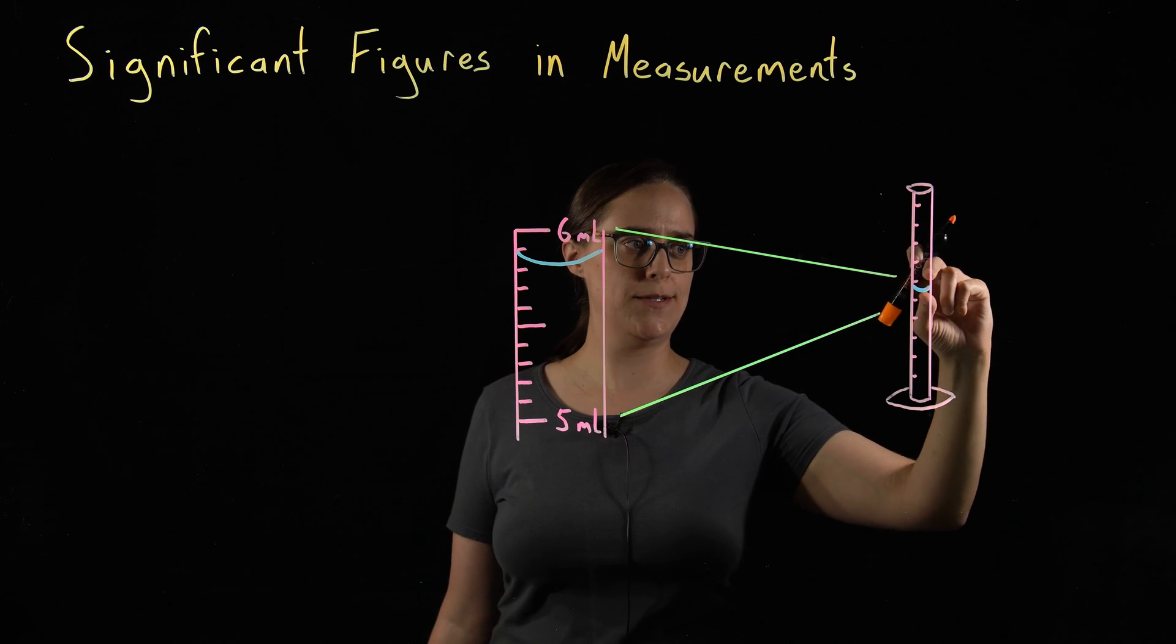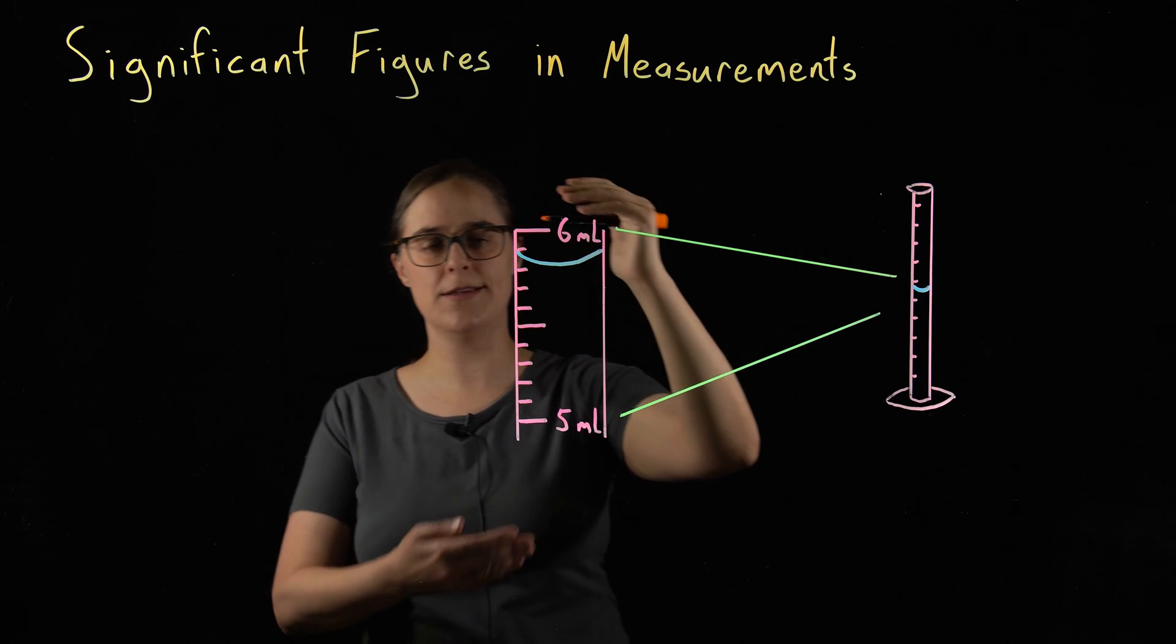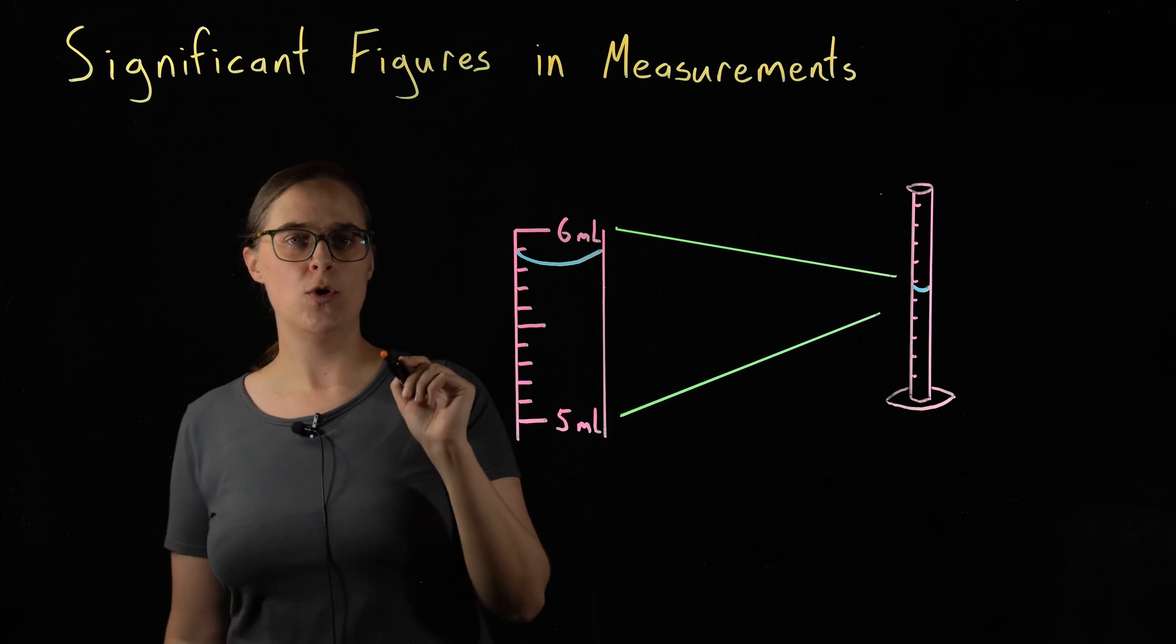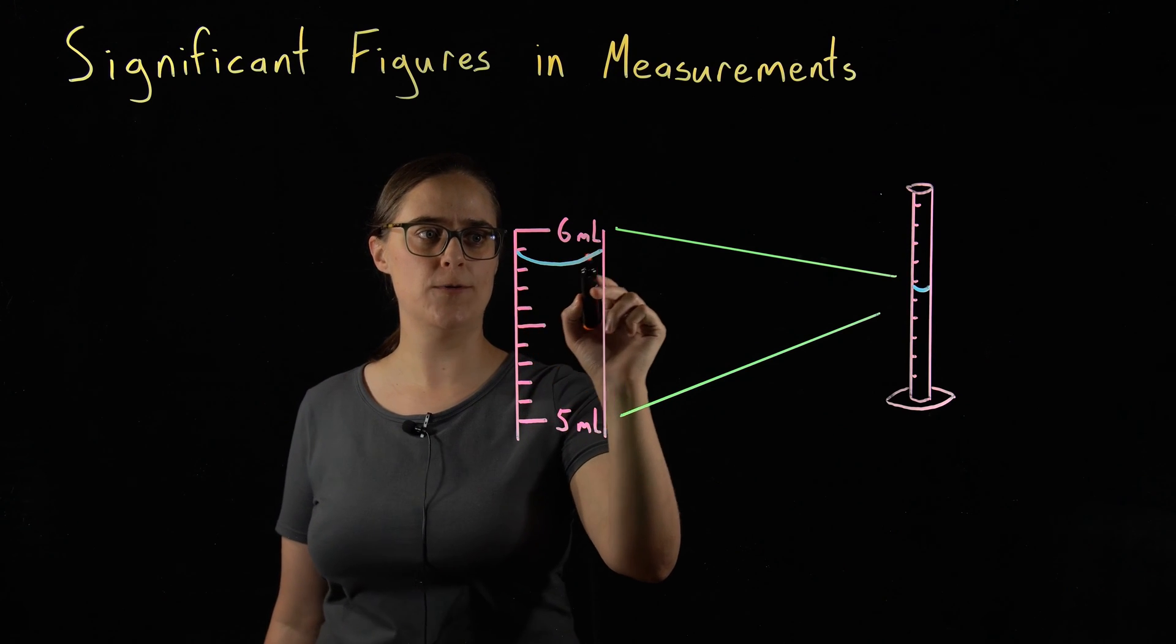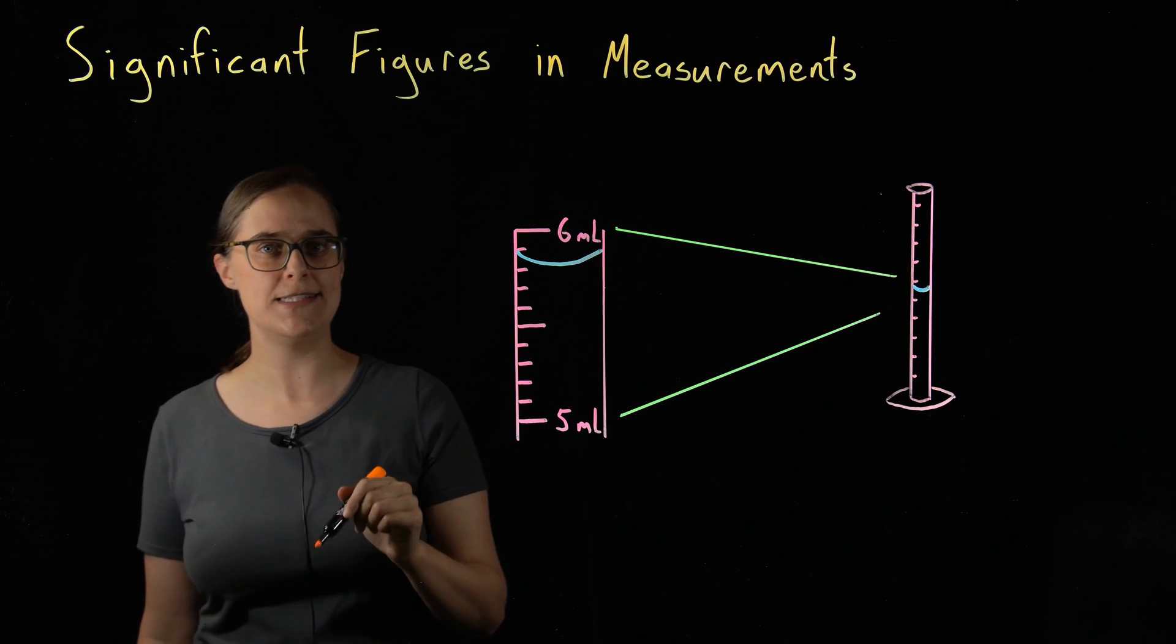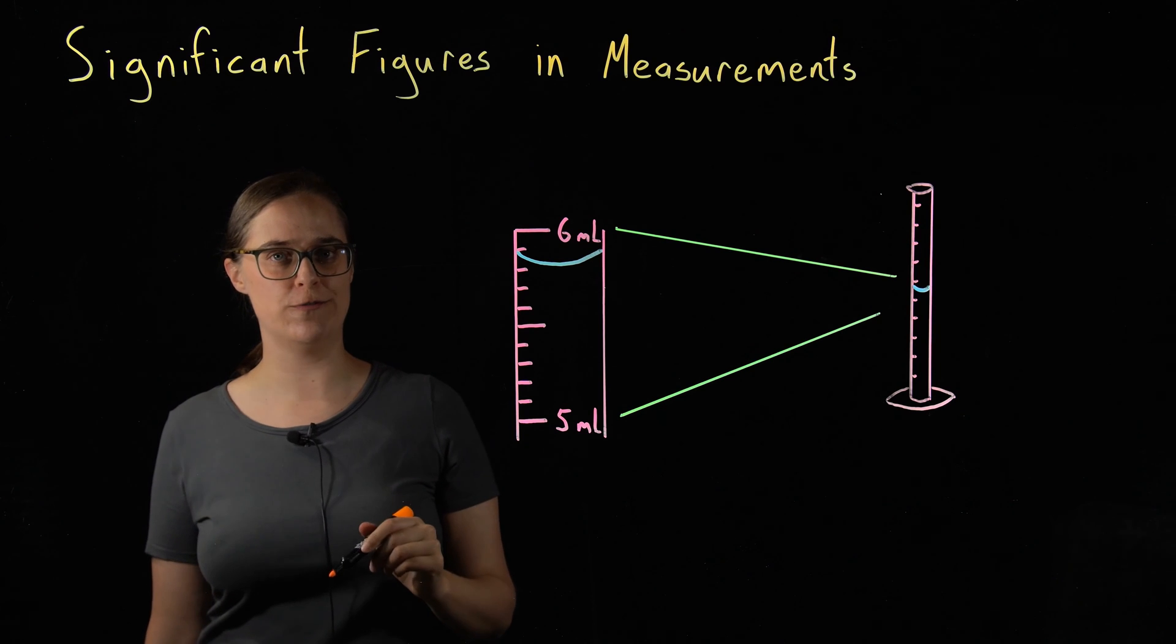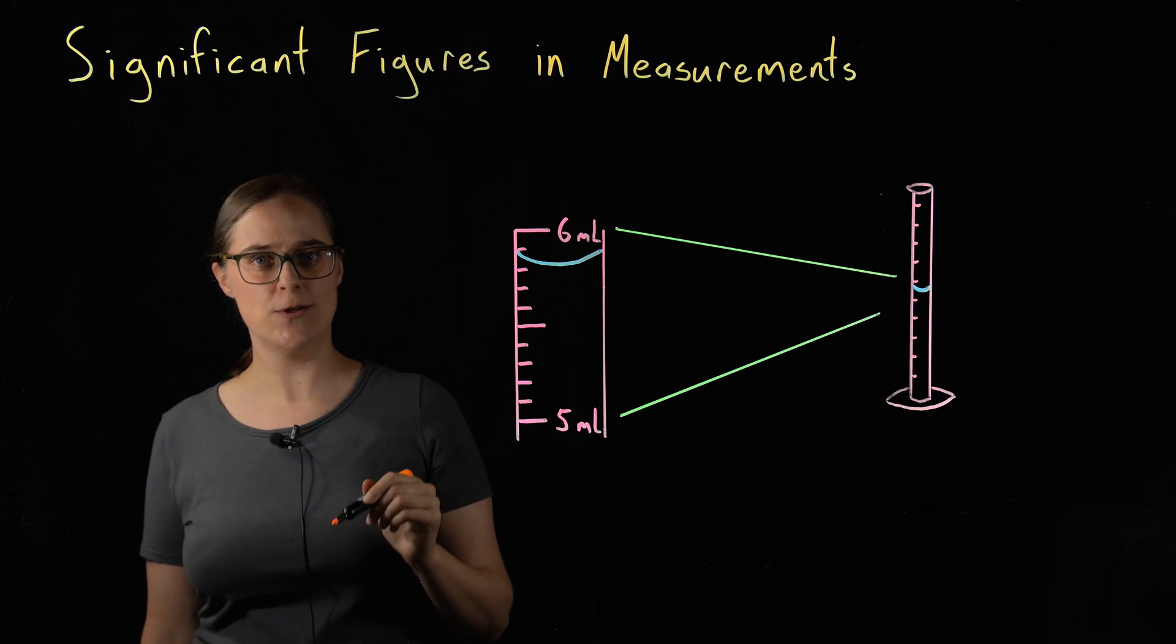Let's zoom into this region surrounding the top of the liquid so that we can take a closer look. What I want to point out is that this blue line, representing where the top of the liquid is, it is not a flat line. It is curved. That curve is called a meniscus.